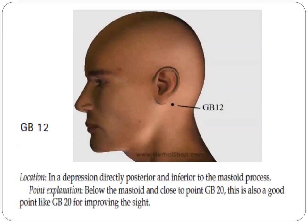Next point is GB12. It is located in a depression directly posterior and inferior to the mastoid process, in close proximity to GB20. This is also a good point, like GB20, for improving the sight.